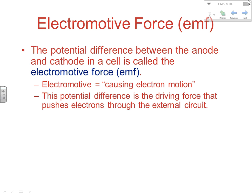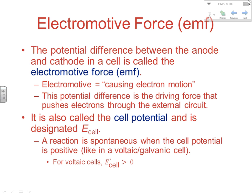Electromotive means causing electron motion. It's the potential energy difference between the two electrodes that becomes the driving force pushing electrons through an external circuit — not like gravity allowing water to fall, but there has to be a reason we get a spontaneous push of electrons through a circuit, and that is the electromotive force, or EMF. It's also called the cell potential, designated by E cell.